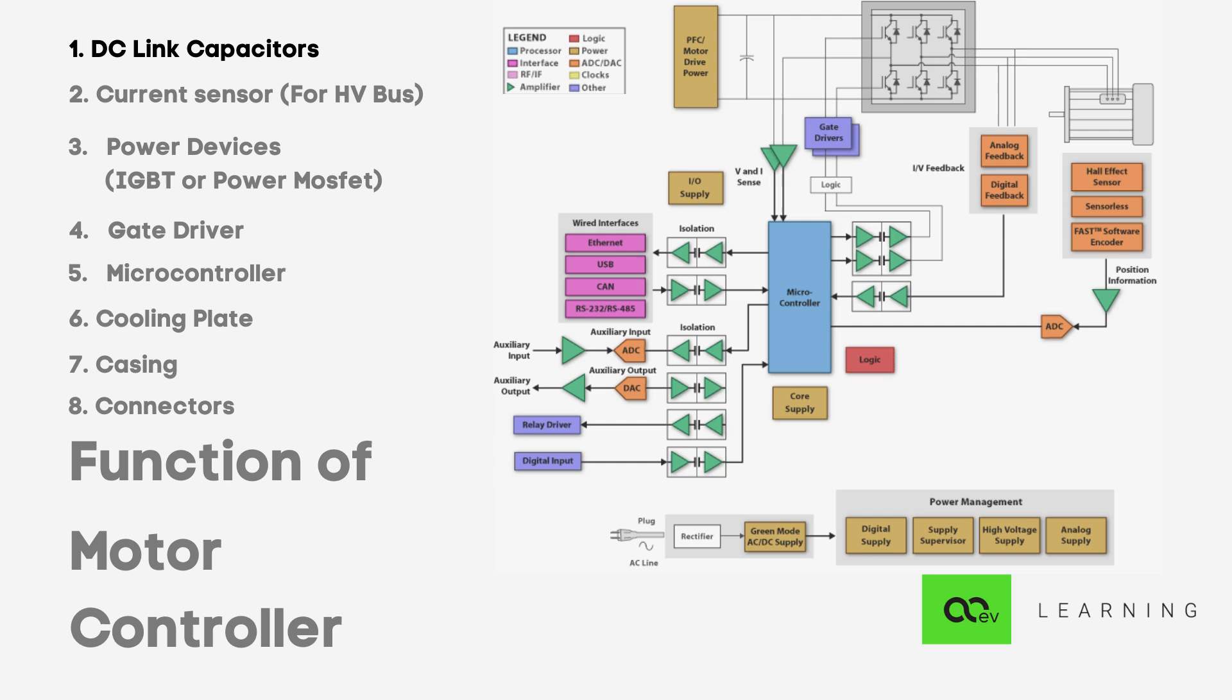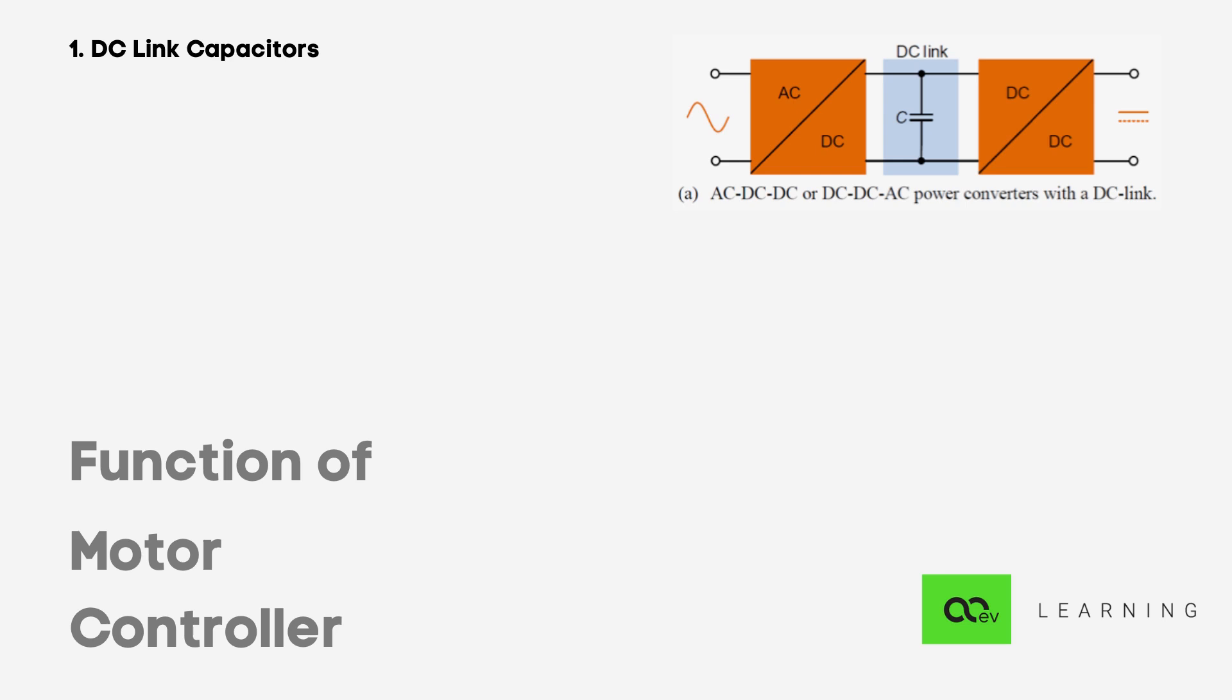DC link capacitors are the first element in the HV circuit part of the motor controller. Very simply put, we require capacitors to provide a near stable DC voltage source. This action can be considered as regulation. One important thing associated with inverters or any power electronics is the harmonics. When we are intending to produce fundamental frequency according to our control strategy, we also end up with harmonics or residual frequency.